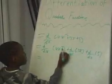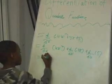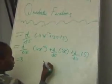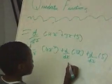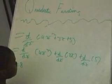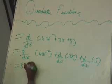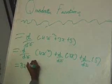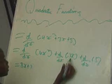4 times 2 is 8x. I put x because we are differentiating. I put the power 3 on its head.